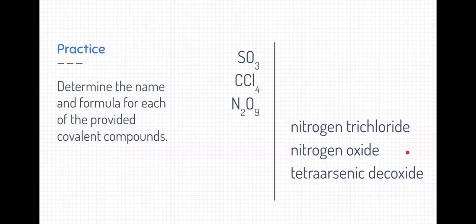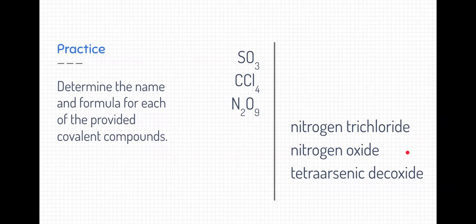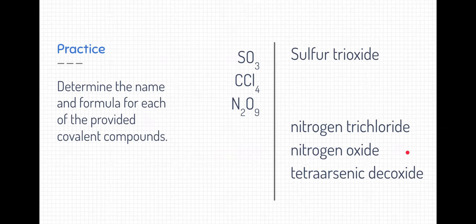So let's go ahead and see if we can practice this. Let's determine the name and formula for each of these provided covalent compounds. Let's start with the first one, SO3. All you need to do is name the elements in order with the prefix to determine the amount. The first one is sulfur trioxide. Notice that we did not use mono for the first element. That's typically not what we do. We sometimes never use mono at all, but we never use it for the first element, only for the second one. So this one's called sulfur trioxide. One sulfur and three oxygens.